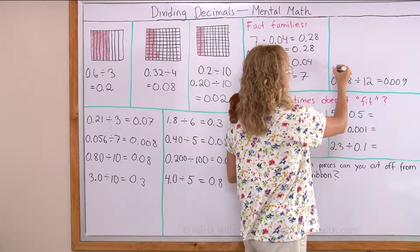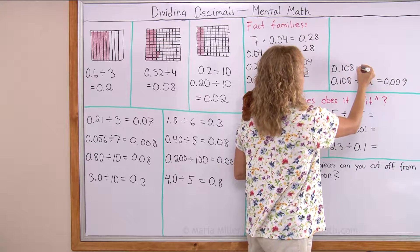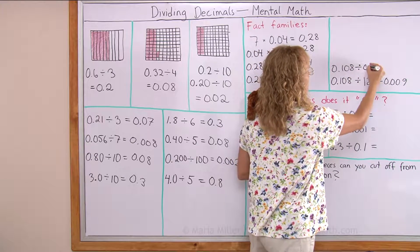And then I can write another division. It starts with the same number, but then I put here 9 thousandths and the answer is 12.